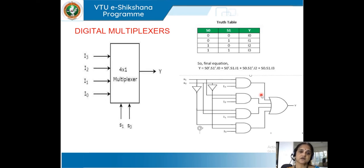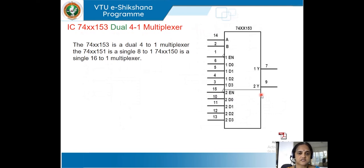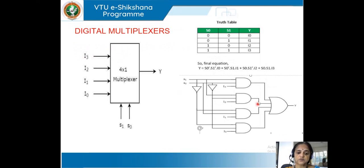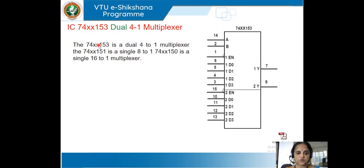Since multiplexers find many real-time applications, manufacturers designed their own dedicated ICs. Companies like Philips, National Semiconductors, and Motorola manufacture these ICs. IC 74153 is a dual 4-to-1 multiplexer, 74151 is an 8-to-1 multiplexer, and 74150 is a 16-to-1 multiplexer. Instead of using three discrete ICs, you can use a single IC like 74153 to fulfill the requirement.